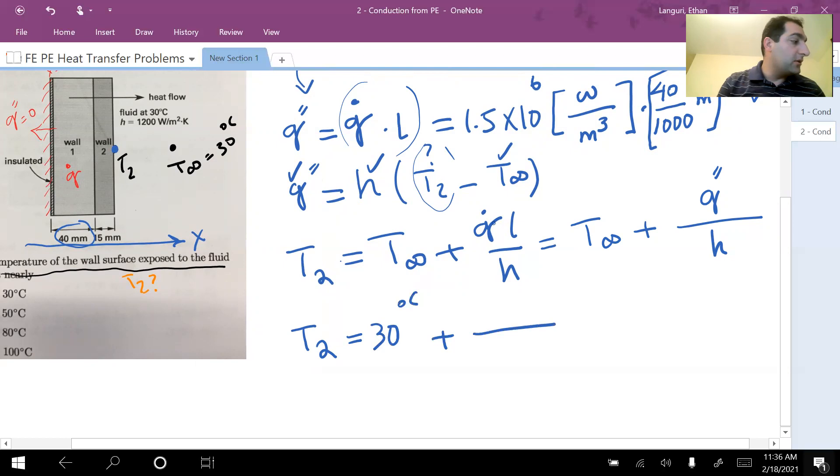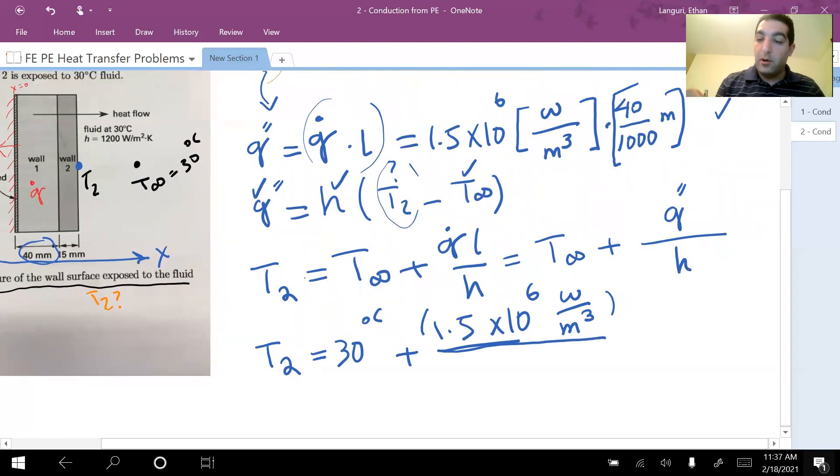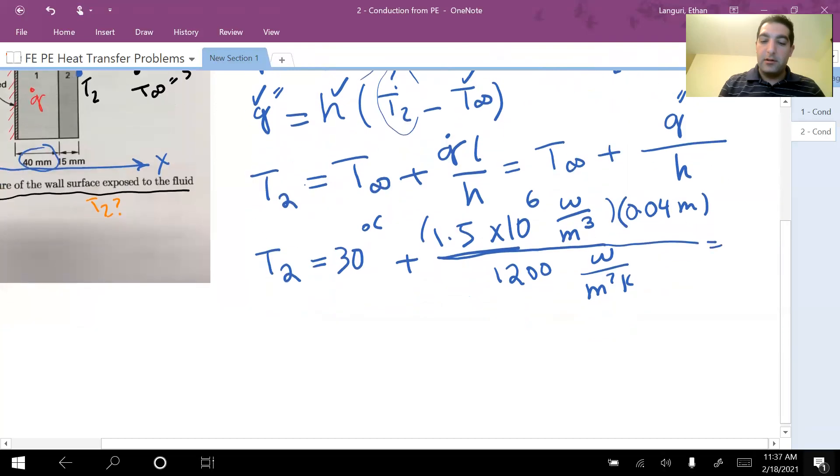Plus volumetric heat generation, 1.5 times 10 to the power of 6 watt per meter cubed, times L, which is nothing but 40 divided by 1,000, or 0.04 meter, divided by h heat transfer coefficient, given to be 1200 watt per meter square Kelvin. And if you do this calculation you get T2 at 80 degrees C, and so that's your answer.